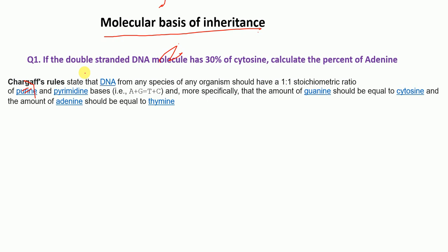Chargaff's rule states that DNA from any species of organism should have a one-to-one stoichiometric ratio of purines and pyrimidines. More specifically, the amount of guanine should be equal to the amount of cytosine, and the amount of adenine should be equal to the amount of thymine.